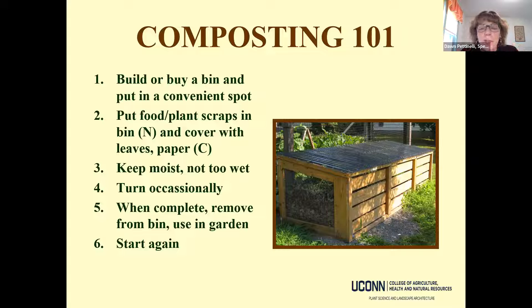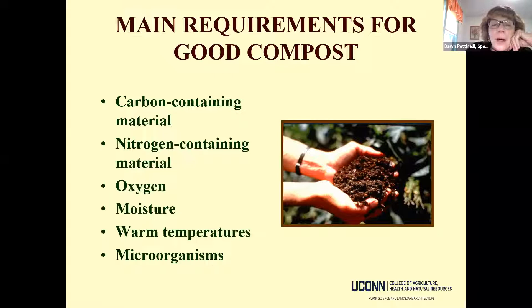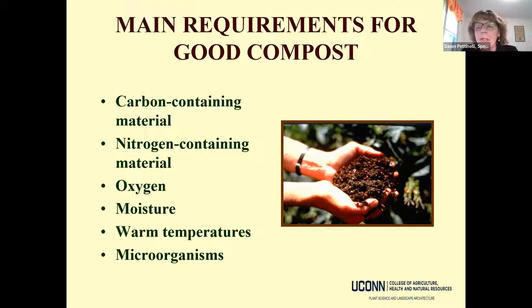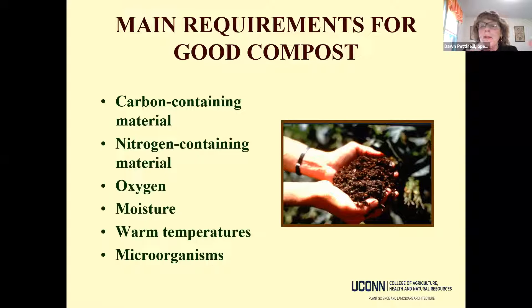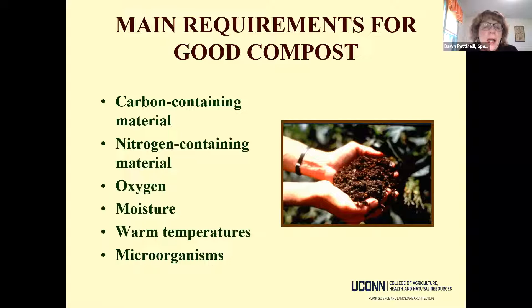The compost food web is complex, starting with microscopic organisms — bacteria, fungi, and actinomycetes — that soften and degrade material. Then slightly larger consumers move in. A teaspoon of topsoil can contain over 50 million bacteria. Many people open their compost bin and see maggots and are alarmed, but flies lay eggs, maggots hatch and decompose organic matter — it's not pretty but not a serious concern if you bury or mix in food scraps.